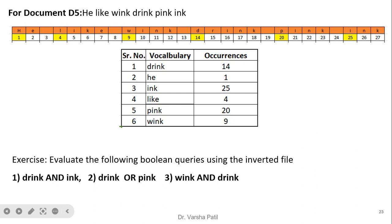The last document, D5, is: he, like, wink, drink, pink, ink. Now it is very easy to solve a query like 'drink AND ink'. We make a table in the exam with D1 to D6 documents and their keywords to find out which are present. By that we can determine which documents satisfy the AND query or the OR query. For difficult queries, it is best to convert the query into DNF form, which makes it easy to solve the operation for information retrieval.